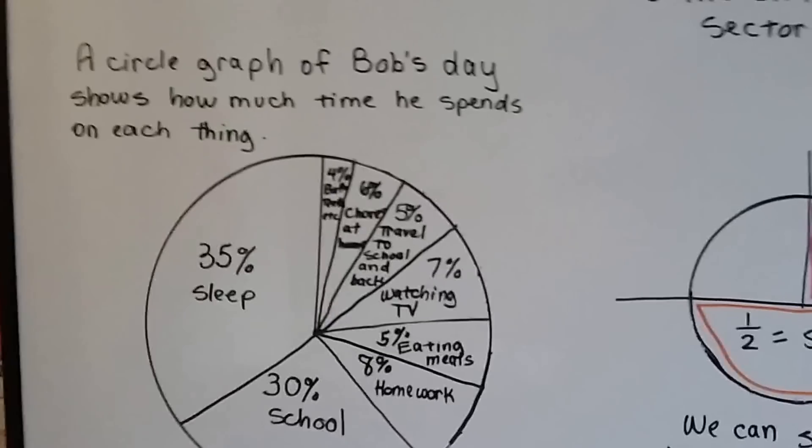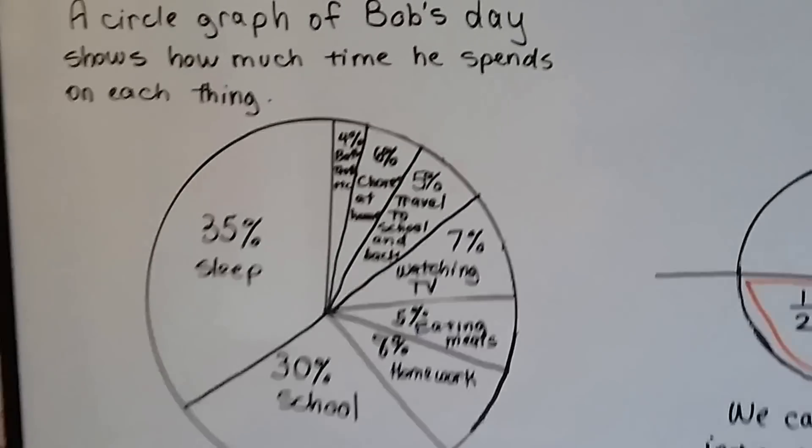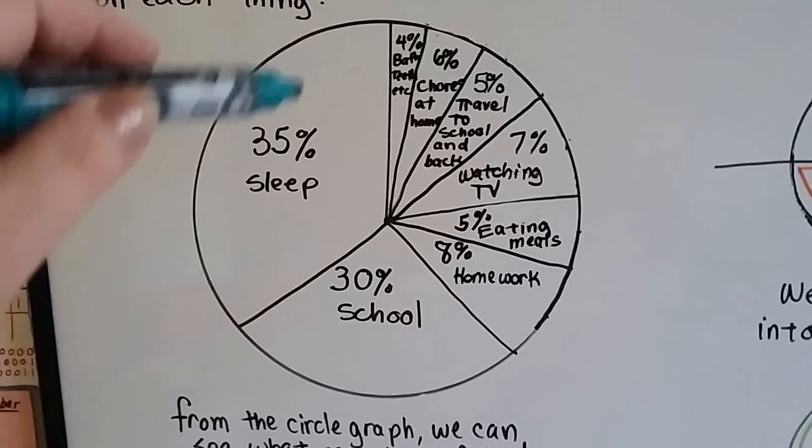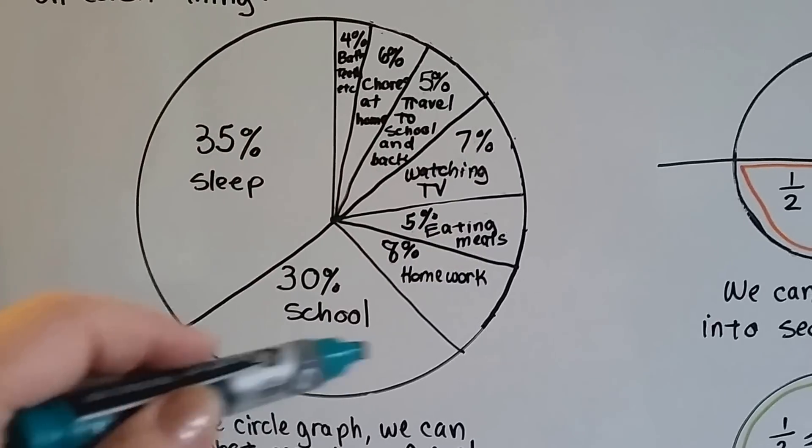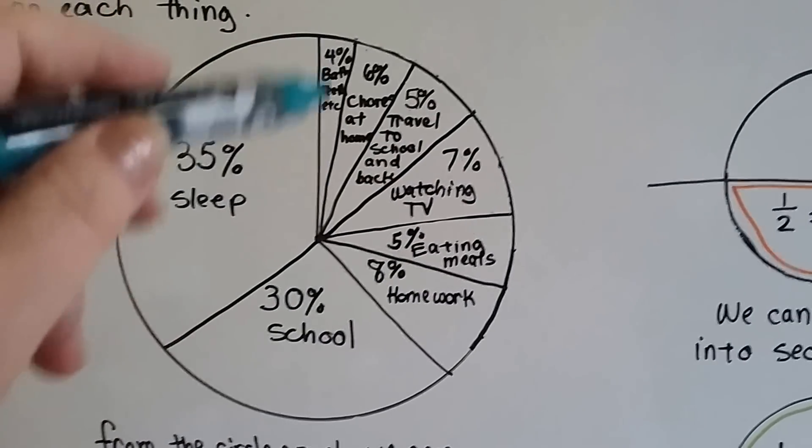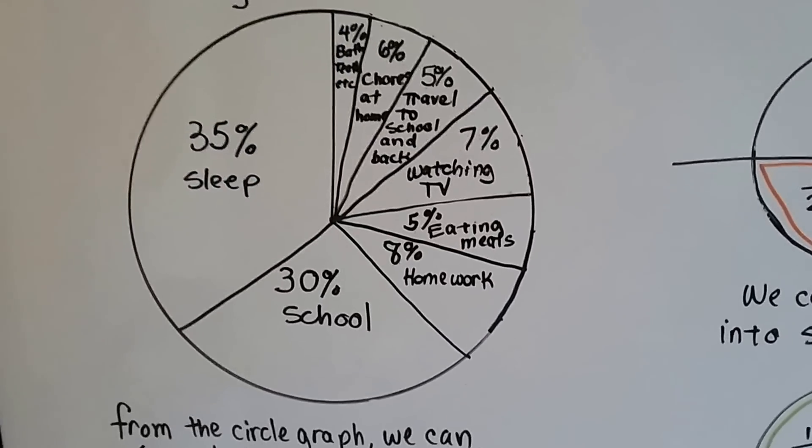Here's a circle graph of Bob's day. It shows how much time he spends on each thing. We can see what he spends the most time on is sleeping and going to school, watching TV and doing homework, and what he spends the least amount of time on is taking a bath and brushing his teeth.